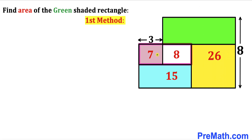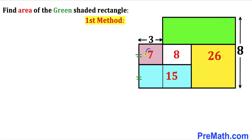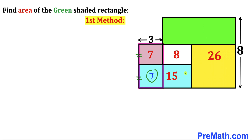Let's focus on the pink and white rectangles. Their combined area is 7 plus 8, which gives us 15. The area of the blue rectangle is 15 as well. Since this side length is the same for both, we conclude that the side lengths are equal. So if the pink rectangle area is 7, then this split portion of the blue rectangle is also 7, and the remaining area of the split rectangle is 8.